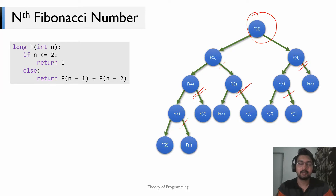This is nothing but the overlapping sub-problem property. Your original problem was to compute F(6), and your sub-problems were F(1), F(2), F(3), and so on. In the algorithm to compute F(6) you're computing F(3) and F(4) multiple times — computing the solution to the sub-problem again and again.